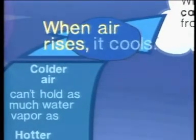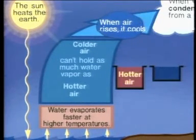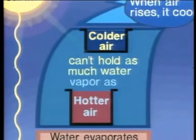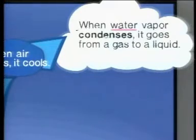When air rises, it cools. Colder air can't hold as much water vapor as hotter air. As the air rises and gets colder, when it gets cold enough it can't hold all the water vapor that's in it, so the water vapor condenses and forms tiny droplets. Millions of tiny droplets in the air make clouds.